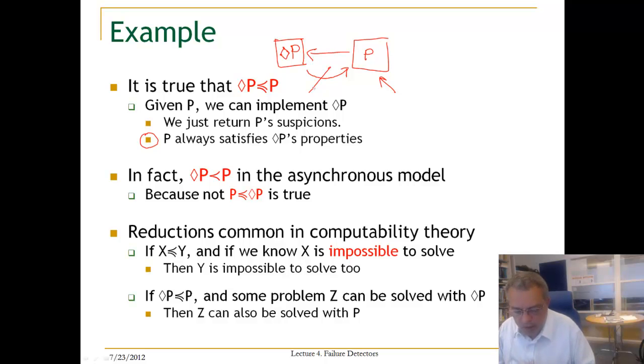So now let us look to what reducibility is good for. Reducibility is common in computability theory, and if we know that X can be implemented using Y, for example, and we know that X is impossible, then we also know that Y is impossible to solve.